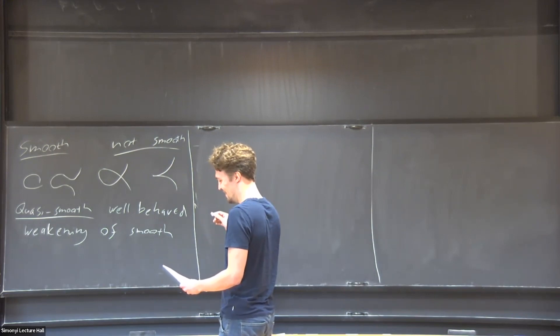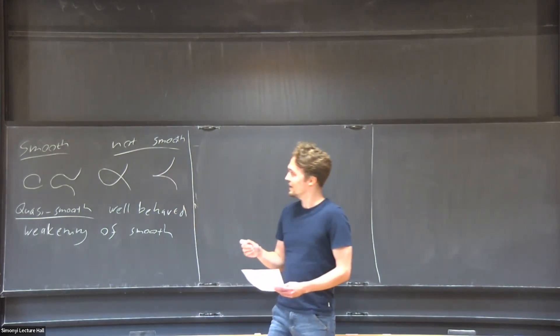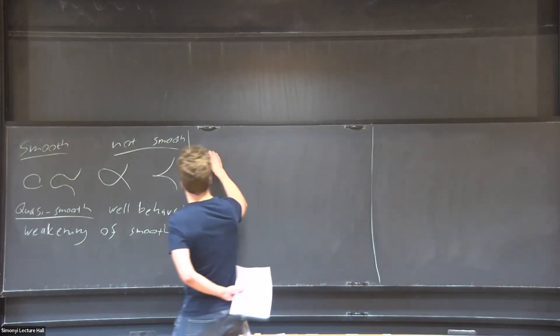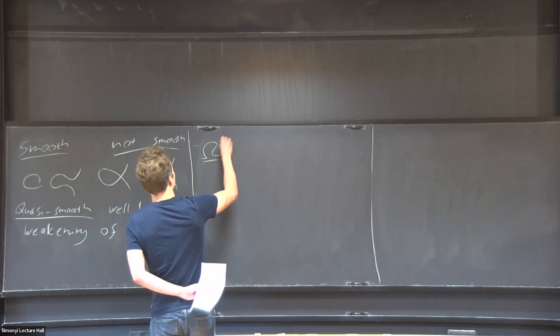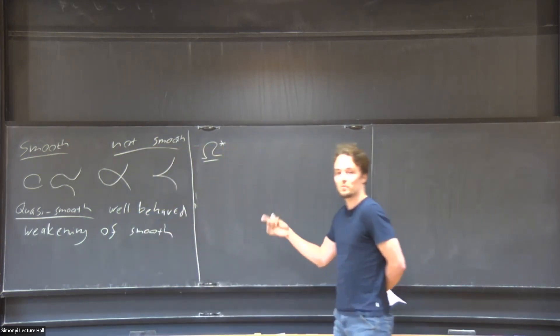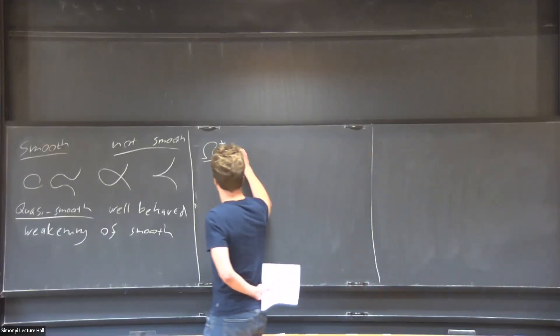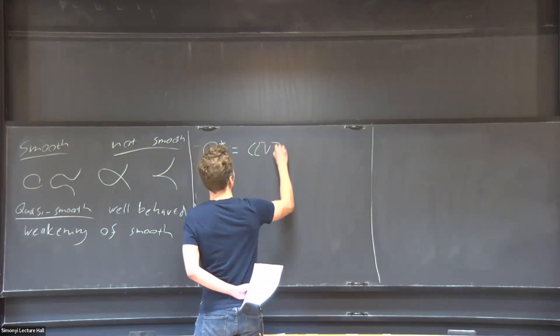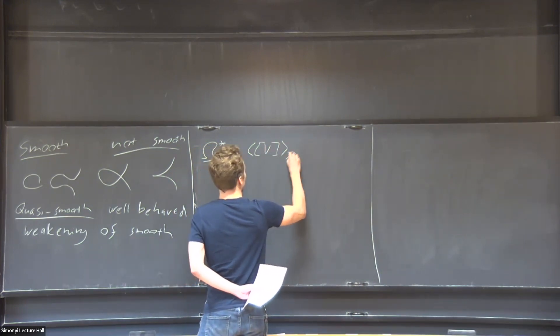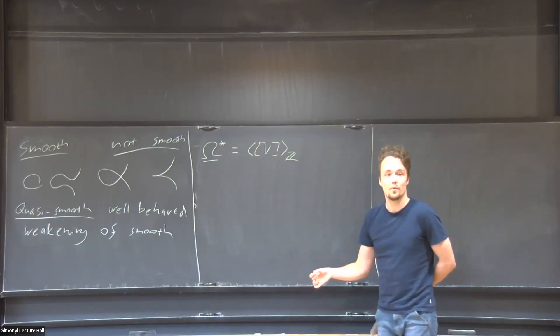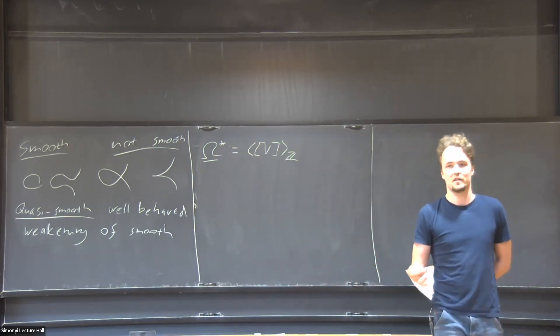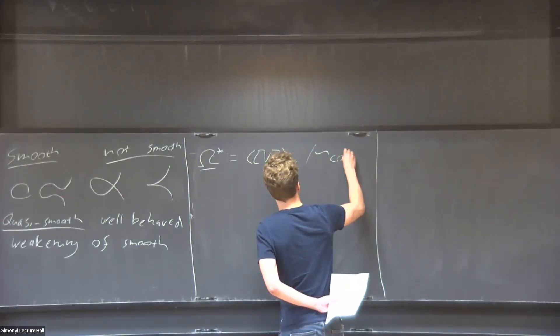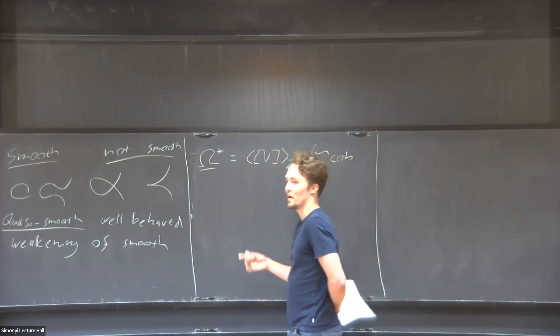So what do I mean by classification of the cobordism? Let me define this pre-cobordism ring of varieties, or cobordism ring for now. That's a really nice geometric description. You start with this free abelian group generated by equivalence classes of quasi-smooth varieties, and then you mod out by the cobordism relation.